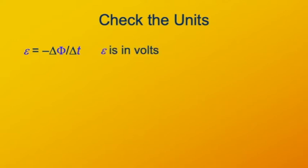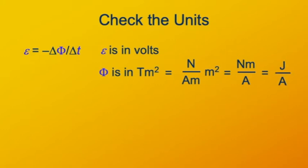It might help to verify that the units come out right. The EMF is in volts. The magnetic flux is in tesla meters squared. A tesla recall is a newton per ampere meter, so I'll substitute that in. Again, simplifying the tesla times the square meter gives a newton meter per ampere. And the newton meter in the numerator is the same as a joule. So the units for magnetic flux come out to a joule per ampere.